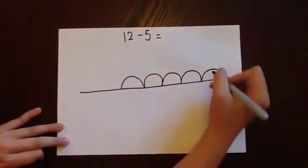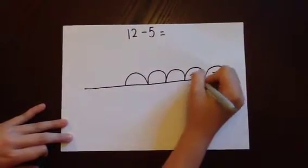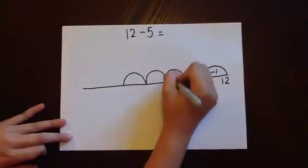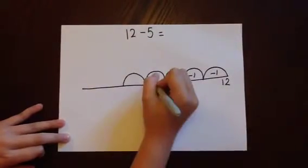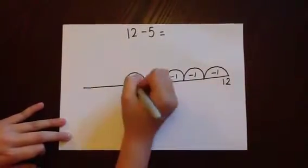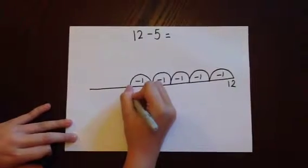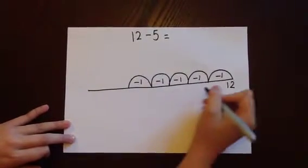It is important to write inside each jump how many we're taking away—in this case, a jump of 1. When recording how many we've taken away, it's important to write the answer where the jump touches the line.